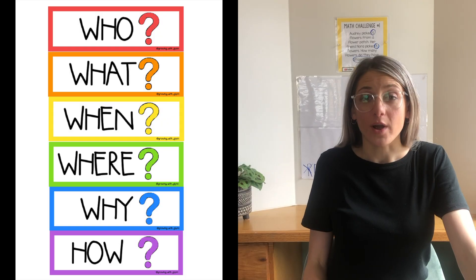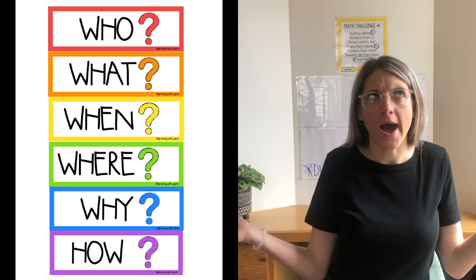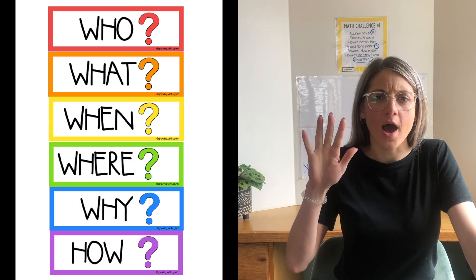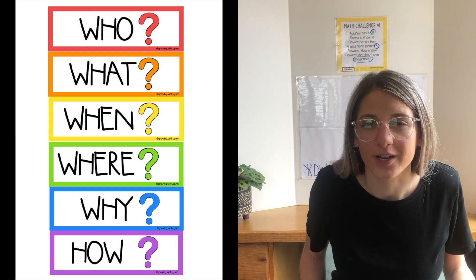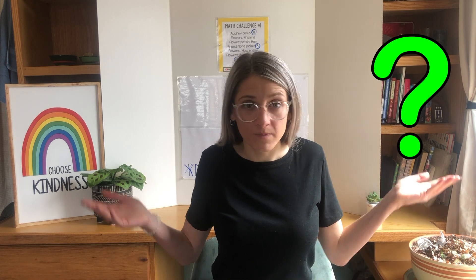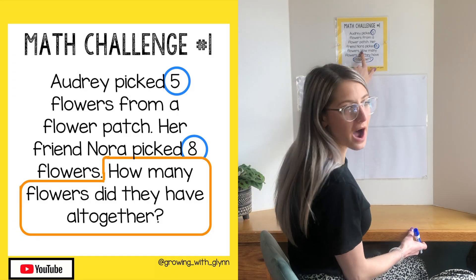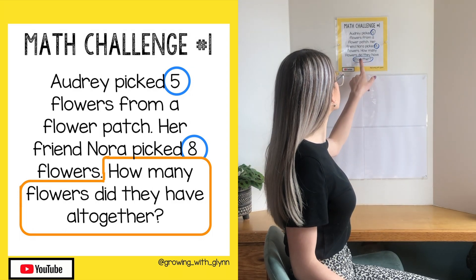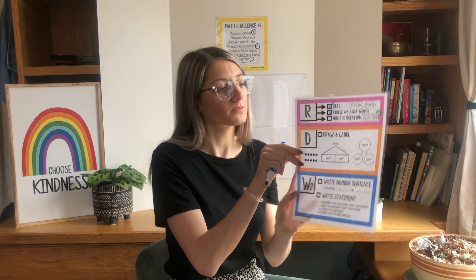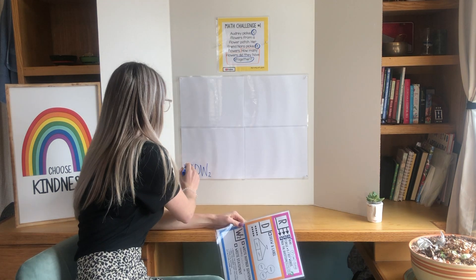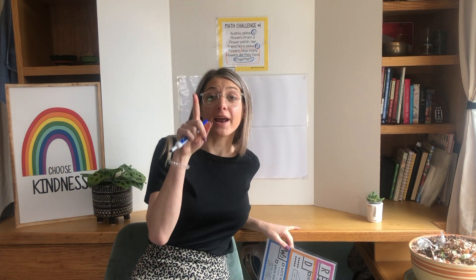Our question word chant goes: Who, what, when, where, and why? How? Try it with me. If we see one of those words, it's probably the start of our question. A question also ends with a question mark. So if we can find a question word to start the question and a question mark, we have our question. In our problem today: 'How?' — that's the start of the question — 'How many flowers did they have all together?' and there's our question mark. So I'm going to box the question. Now I've completed the third checkbox for my R, made my third line, starred the R, and I can move on to the next letter.